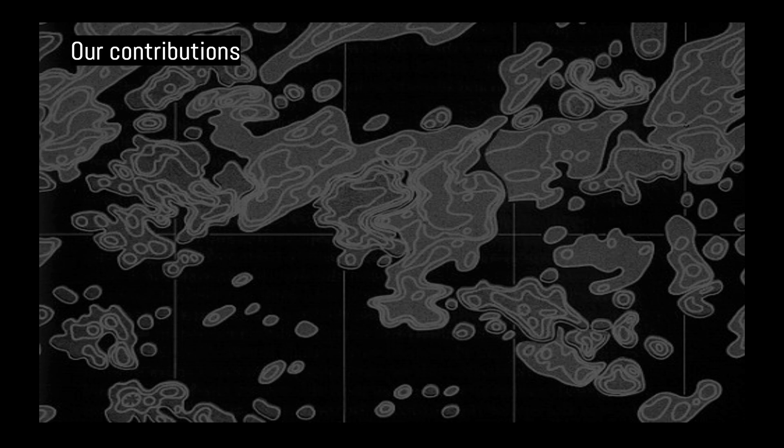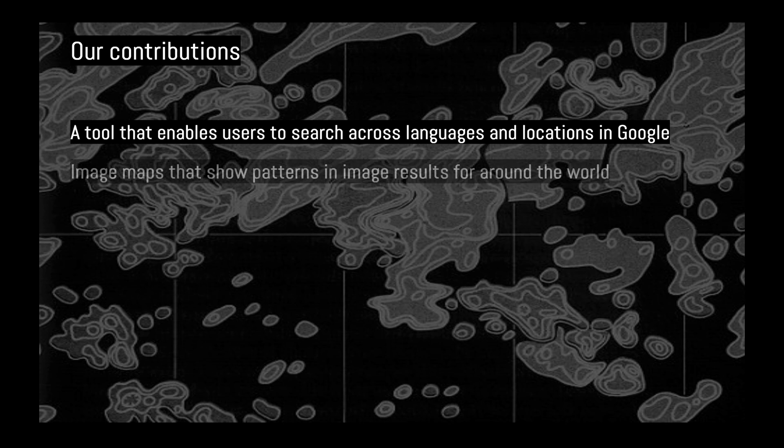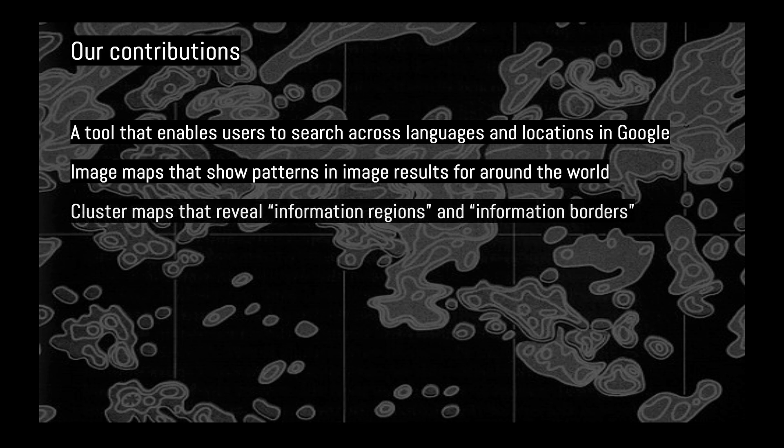Our project consists of three parts: a tool that enables users to search for any query in any three Google-supported countries with accompanying languages, returning Google's text and image results for each set of parameters; a collection of image maps that show the image results for selected queries in almost every Google-supported country; and a collection of cluster maps that reveal information regions and information borders in text results for selected queries worldwide.